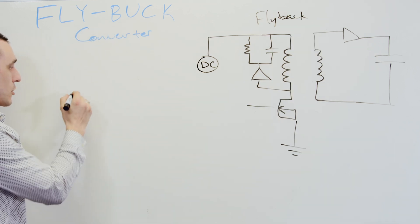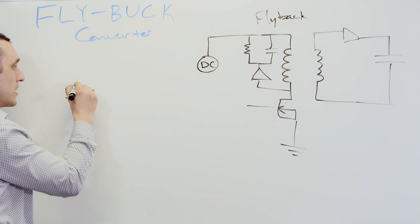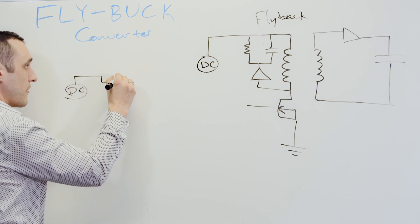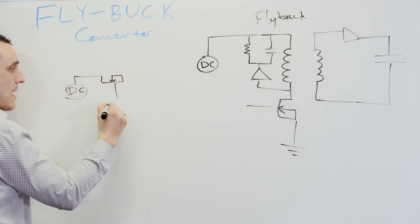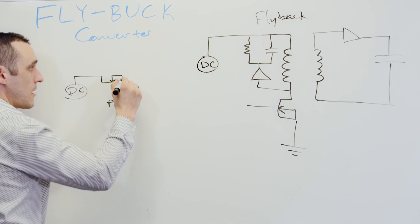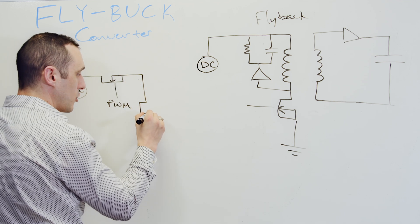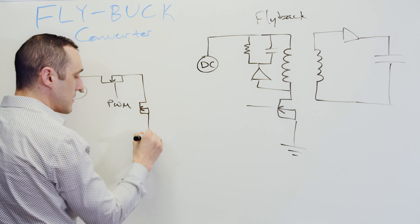Now with a buck converter we also have a DC input. We bring this over to a FET. We have a PWM signal here. Over here we then have usually a diode, but then we could also have another FET.